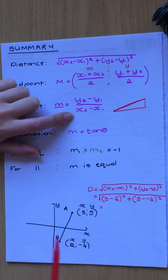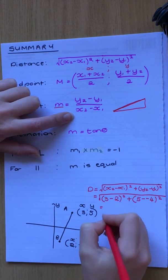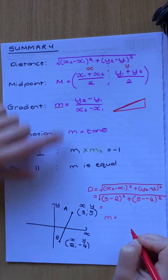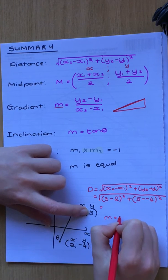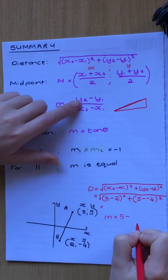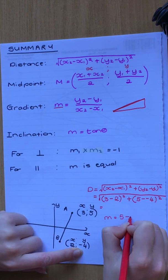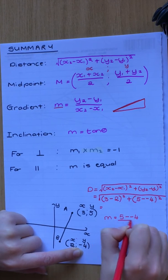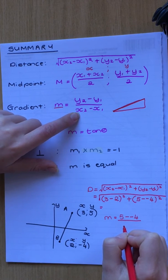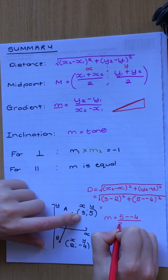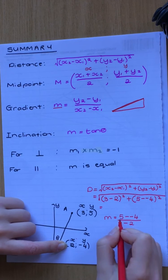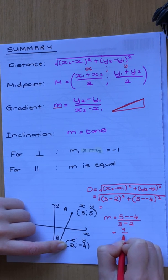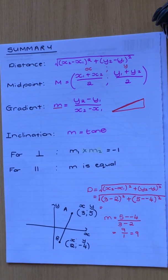So let's say I want the gradient for this line. I choose this to be y2, so it's 5 minus the other y coordinate which is negative 4, so it's minus minus 4, over x2 which I decided was this one, so it's 3 minus 2. Remember minus minus becomes a plus, so it becomes 5 plus 4, which is 9, over 3 minus 2 which is 1. So this gradient is just 9. Using these formulas is very simple.